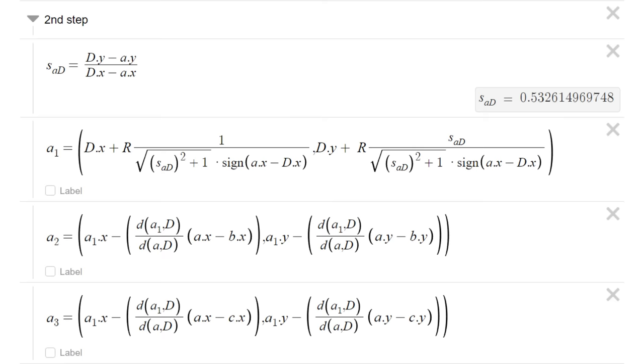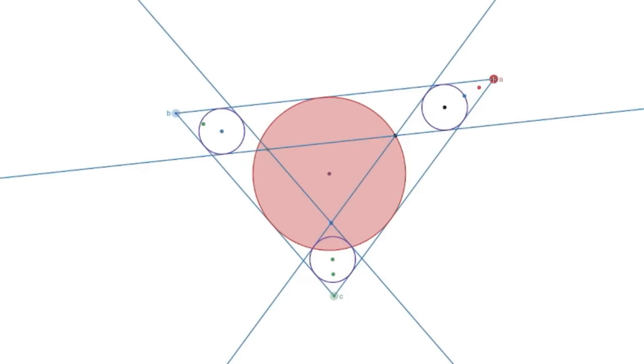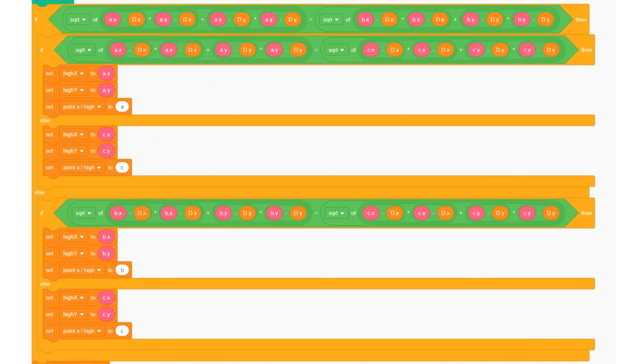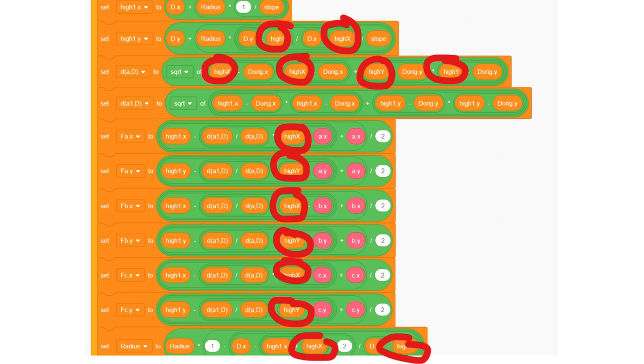This is because it does the second step using point A every time, when sometimes it should be using point B or C. It always needs to use the point that is farthest from the incenter. So in Scratch, I just added this piece of code that sets these variables to whichever point is farthest and put them in where they're needed, and now it works perfectly.